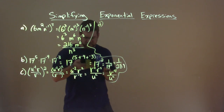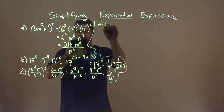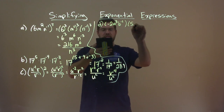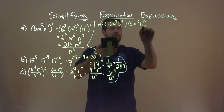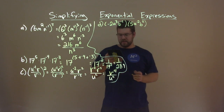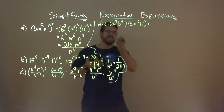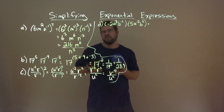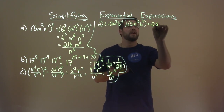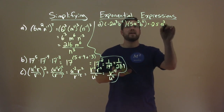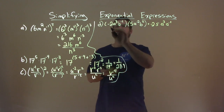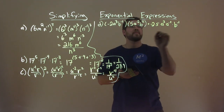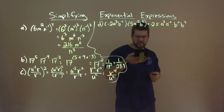On d: we have negative 2 a to the third b to the negative 1 times 5a to the negative 2 b to the second power. Since it's all being multiplied — multiplication really across the board — every single one of these little bits is being multiplied. Let's rearrange and put our like terms next to each other: negative 2 times 5, times the a's — a to the third times a to the negative 2 — times b to the negative 1 and b squared.